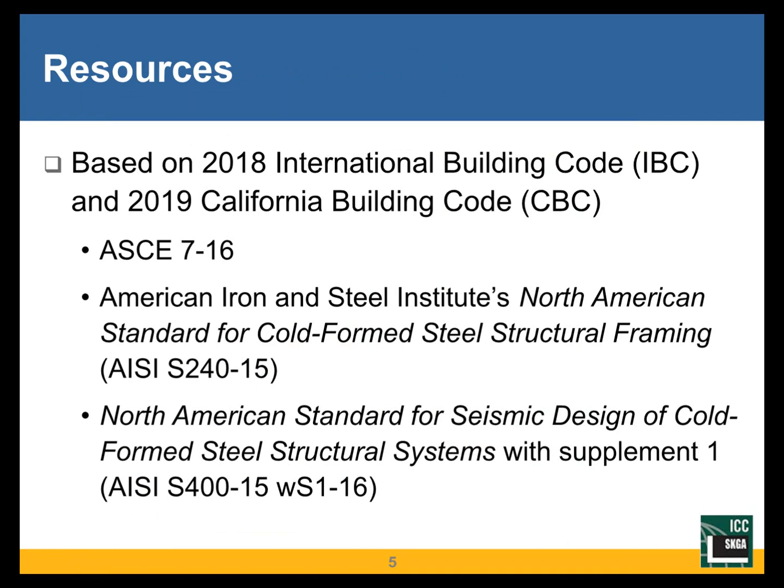This presentation is based on the 2018 International Building Code and the 2019 California Building Code, which is based primarily on the 2018 IBC. The reference documents in both codes are ASCE-7 (Minimum Design Loads for Buildings and Similar Structures), and two AISI standards: AISI S-240, the North American Standard for Cold-Formed Steel Structural Framing (2015 edition), and AISI S-400, the North American Standard for Seismic Design of Cold-Formed Steel Structural Systems, including Supplement 1. Throughout the presentation, these will be abbreviated as S-240 and S-400.